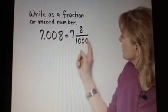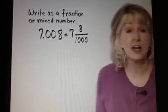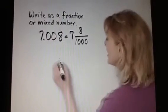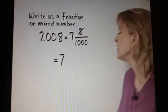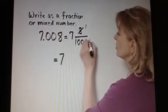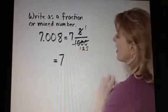Once again, we do need to see if we can simplify. 8 and 1,000 do have a common factor of 8. 8 divided by 8 is 1, and 8 divides into 1,000 125 times.